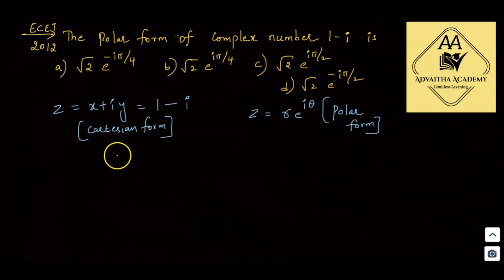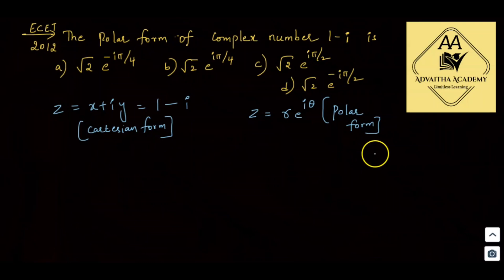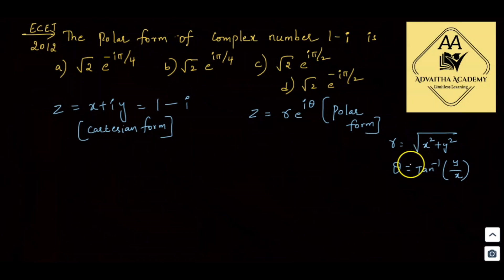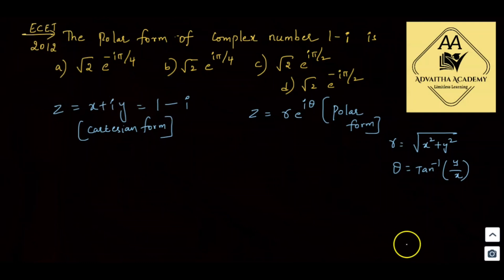We need to convert from Cartesian form to polar form. Using the formulas directly: r equals root of x squared plus y squared, and theta equals tan inverse of y by x. Comparing the complex number 1 minus i with x plus iy, the real part x equals 1 and y equals minus 1.